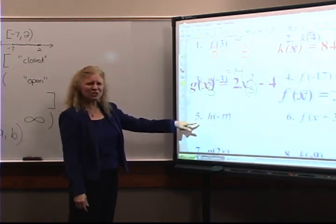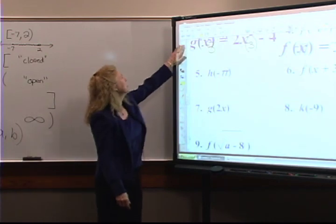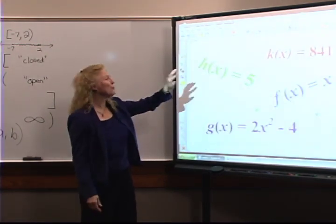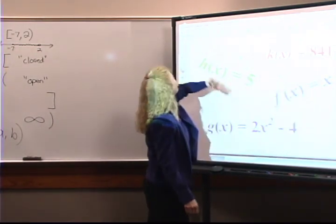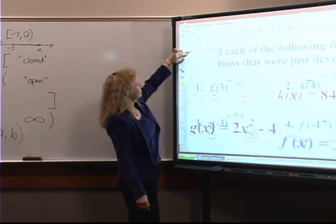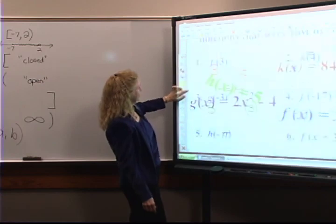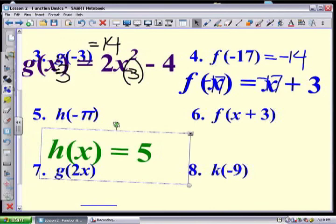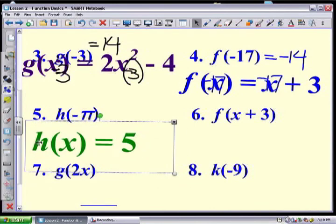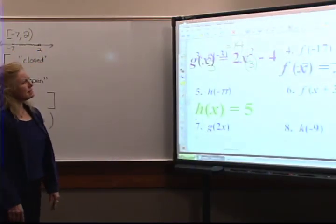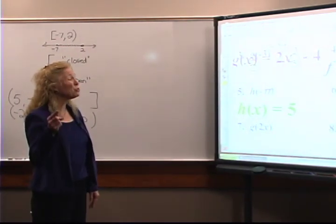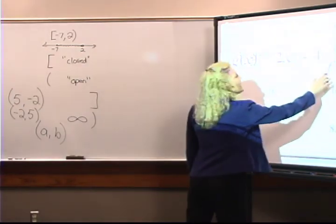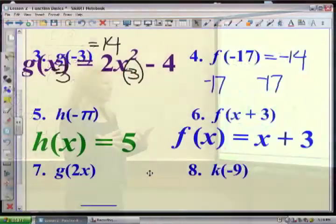Next up is h(-π). I go looking for the h function — and it's that constant function h(x) = 5. So h(-π) = 5 because there's nothing to do with my input — I simply give the answer of five. For number six, this is where problems start to pop up if you're not grasping what we're trying to do — we're now being asked to put in a more complex expression as our input.